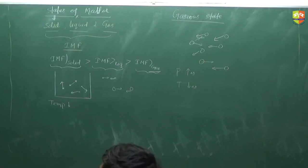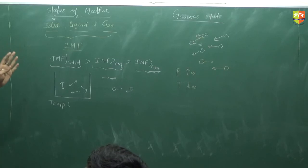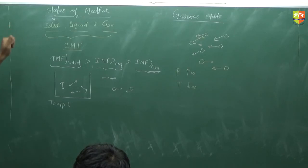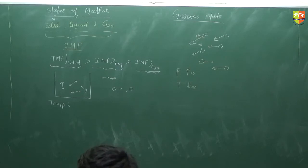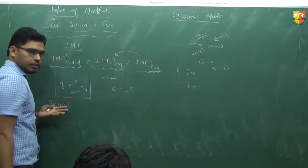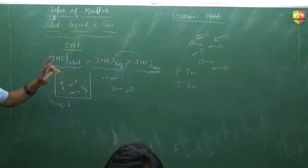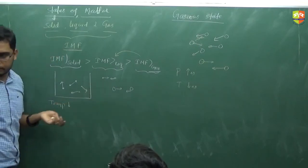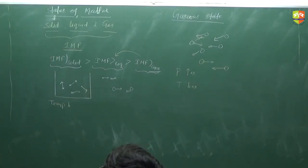What I am saying is: I am talking about the change in state. Either you increase pressure or you decrease temperature to convert gas into liquid. When a state change occurs, you cannot apply PV = nRT — that is only applicable for the gaseous state. To convert gas into liquid, you increase pressure or decrease temperature, because you need to increase the intermolecular force.